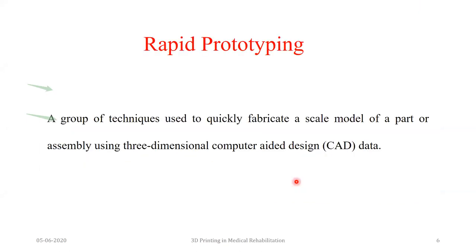Now what is rapid prototyping? Rapid prototyping is a name for a group of techniques used to quickly fabricate a scaled model of a part. Scale doesn't always mean small only or large only — it could be 1:1, or smaller. If making an airplane I'd make 1:100 or 1:1000. But if making a human body part — an artery, part of an eye, or a bone — maybe I'd want a 10 times bigger part. Scaling is possible at every stage. We deal with a group of techniques to fabricate the desired shape using one RP technique, and for that we require knowledge of three-dimensional computer-aided design — CAD data.